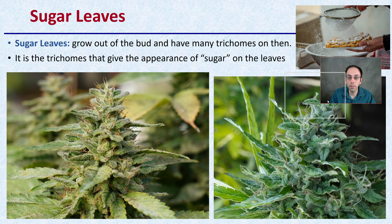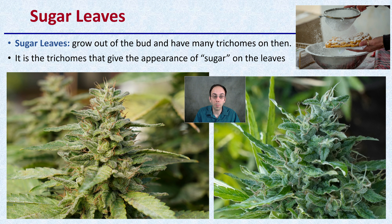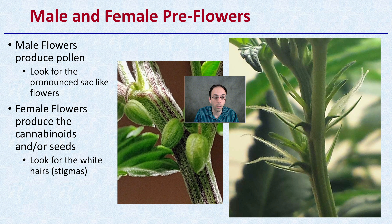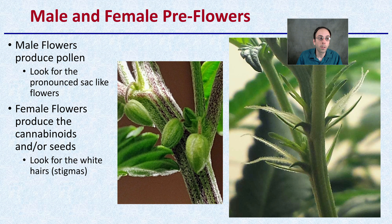Then we get into sugar leaves. These leaves grow out of the bud and have many trichomes on them, and it's the trichomes that give the appearance of sugar on the leaves. If you've put powdered sugar on something, it has that same appearance — this is why they're called sugar leaves. What you're actually looking at is a dense collection of trichomes.